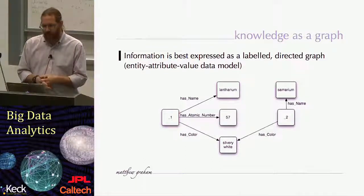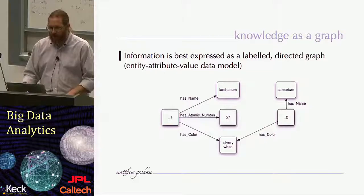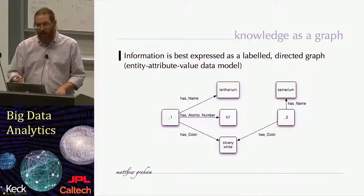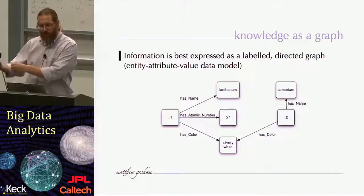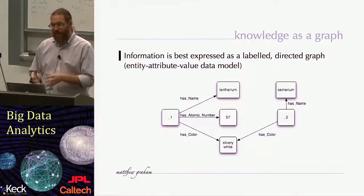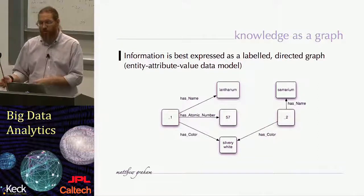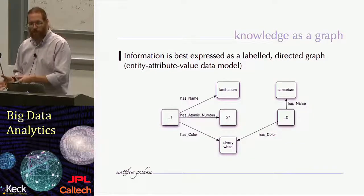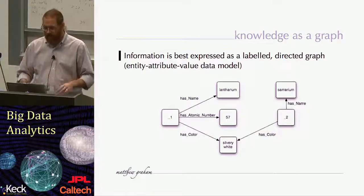The idea is that we have essentially triplets which represent facts of information or knowledge. In the particular graph shown, we represent something with an arbitrary name — underscore one — which has a name 'lanthanum', a property called hasAtomicNumber with value 57, and a property called hasColor with value 'silvery white'. Then we have another entity called underscore two, named 'samarium', which also has a color 'silvery white'. So we have a set of entities as subjects, a set of entities as objects, and a set of properties relating subject and object together, and in this way we can build up arbitrary graphs of knowledge.